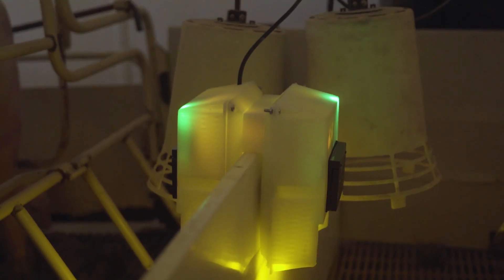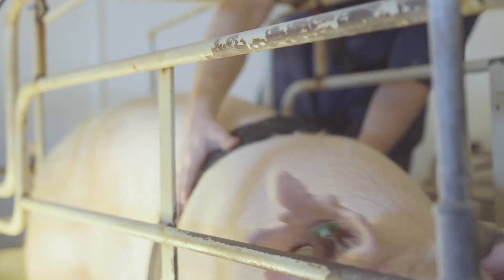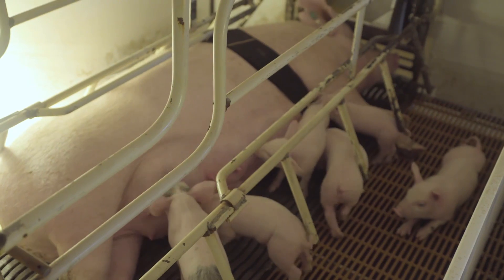When we detect that piglet in distress, we communicate to a lightweight wearable placed on the sow's chest, which will initiate a gentle impulse or vibration, alerting her to stand up and allowing that little piglet to run free.